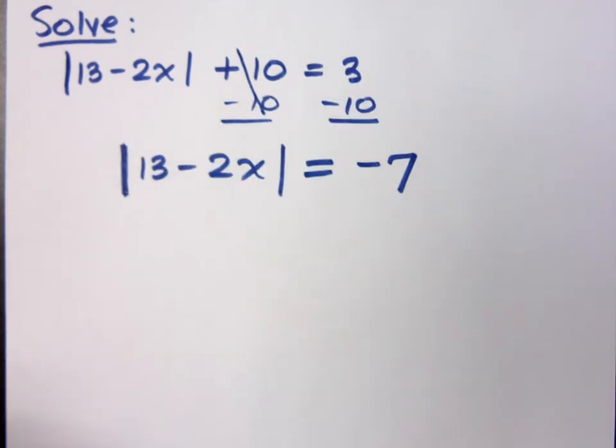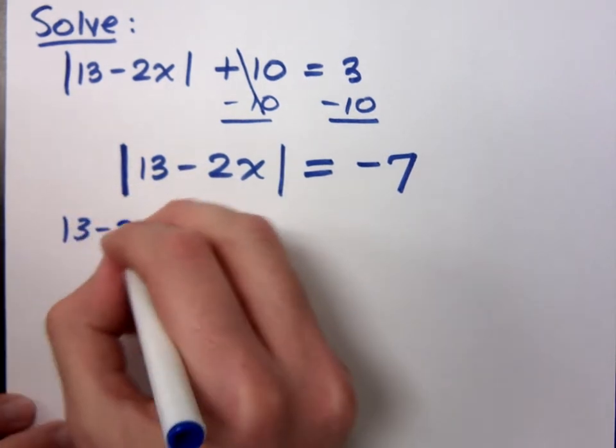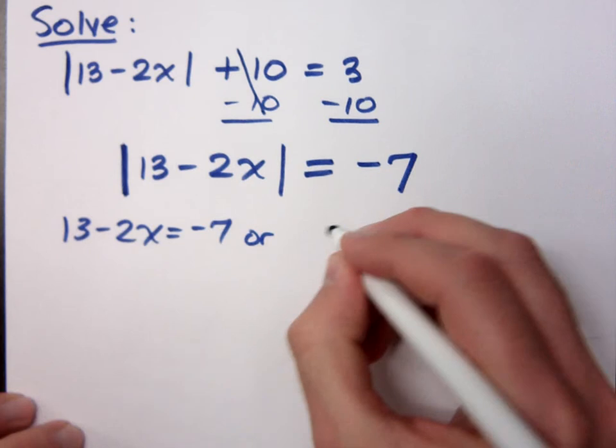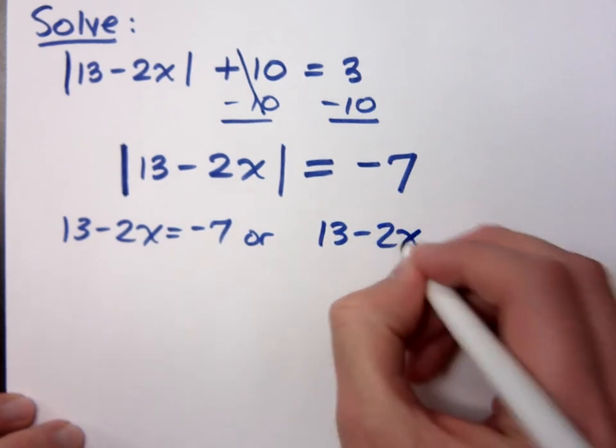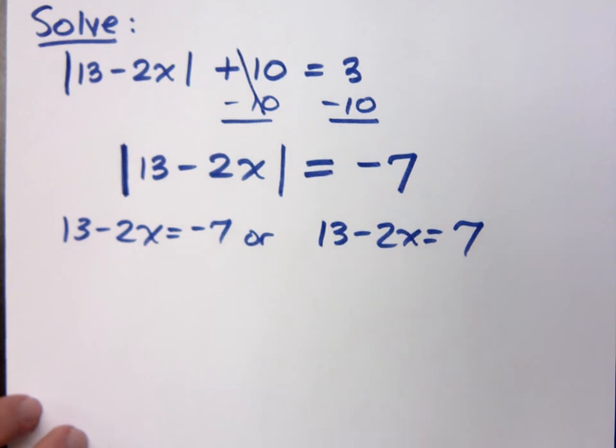This is what some students will do. They'll say, okay, so 13 minus 2x equals negative 7. We've got to change the sign for the other one. And they're going to come up with two answers, but we know something's wrong.